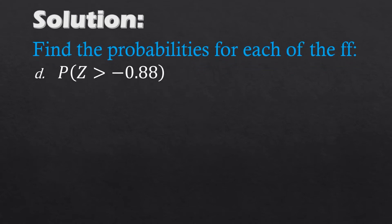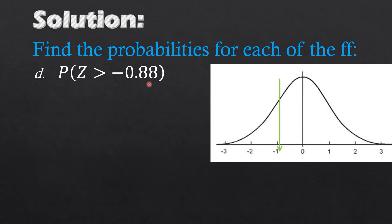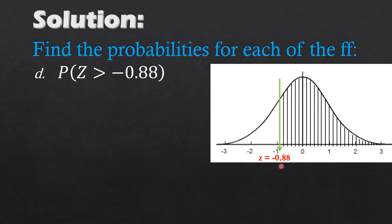Now for the fourth problem: find the probability of P(z greater than negative 0.88). Our z score is negative 0.88, located on the left side of the normal curve. Since it is greater than, the shaded region we need is to the right.